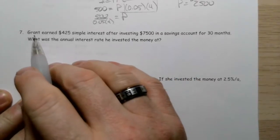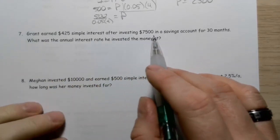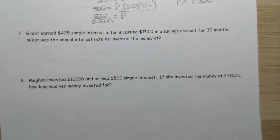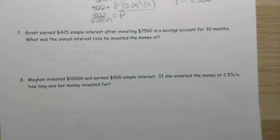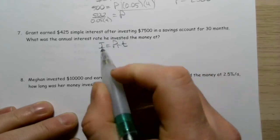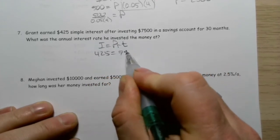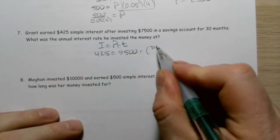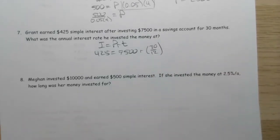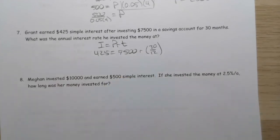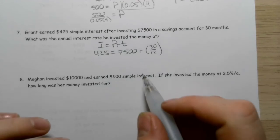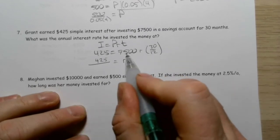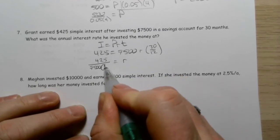Grant earned $425 simple interest after investing $7,500 in an account for 30 months. What was the annual interest rate? Similar sort of question, just a different thing we don't know. Interest equals PRT: $425 equals $7,500 times R times 30 over 12—because I didn't give it to you in years. I'm going to divide 425 by 7,500 multiplied by 30 over 12.